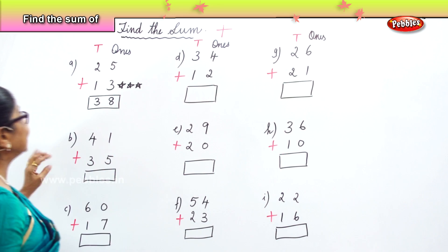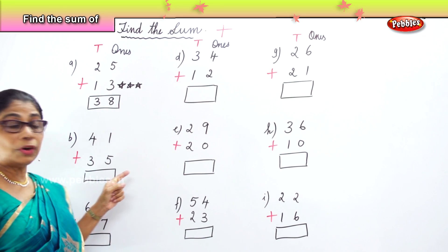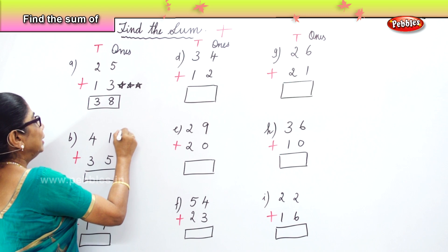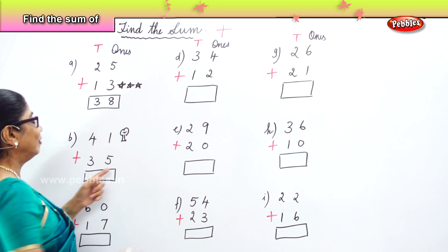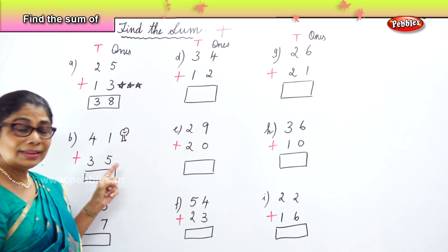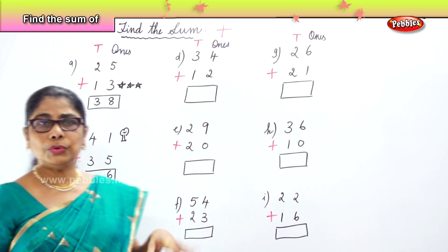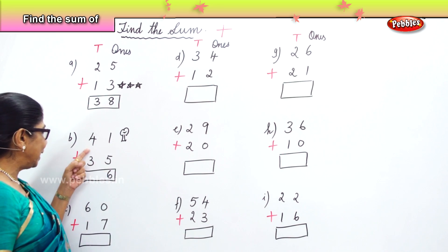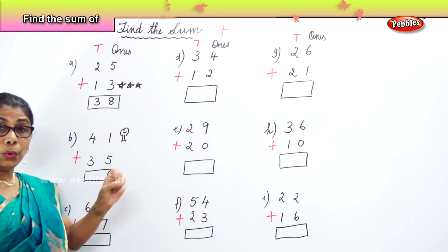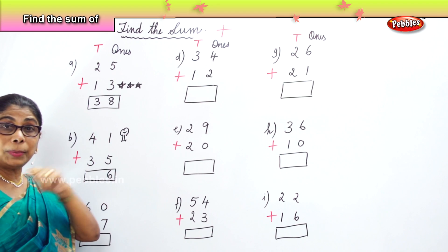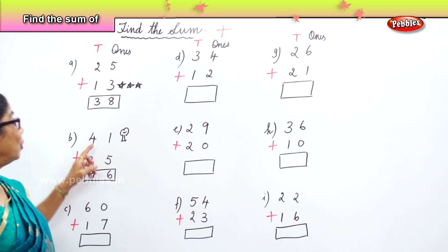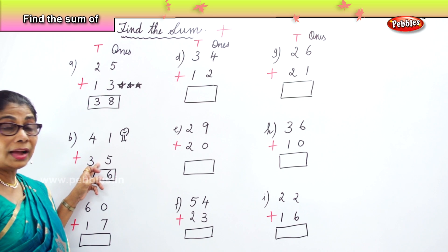Next set: find the sum of forty-one and thirty-five. You have one in the ones place and five in the ones place. Five plus one? Six ones. Now go to the tens place: four tens and three tens. Four plus three? Seven tens. Very good. So you have seventy-six. The sum of forty-one and thirty-five gives you seventy-six.